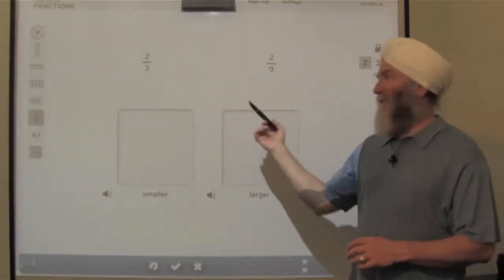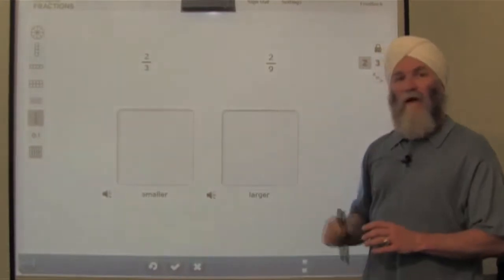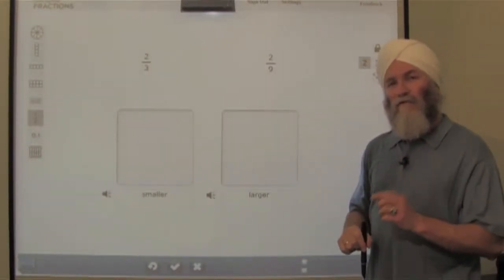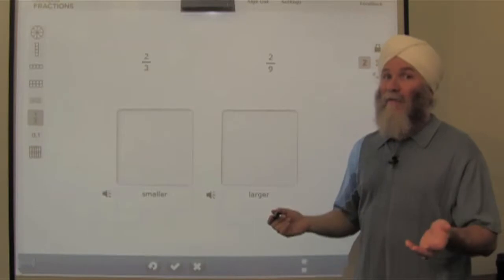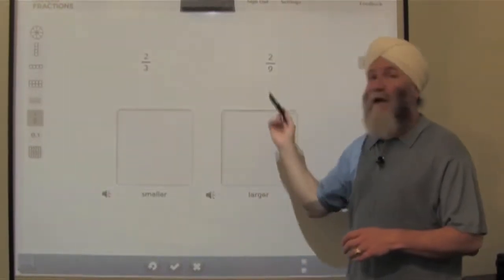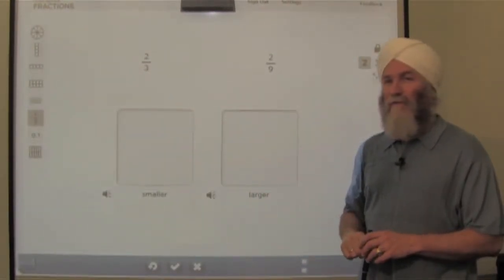Here we have the two fractions written out, two-thirds and two-ninths, which is a larger fraction. They have the same numerator, they have common numerators, and they have different denominators that are uncommon. Two-thirds or two-ninths.